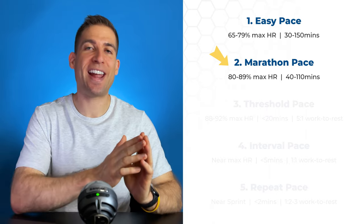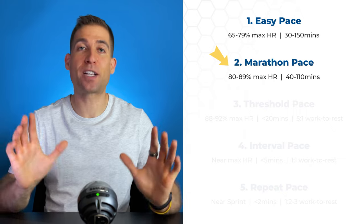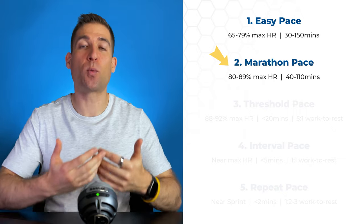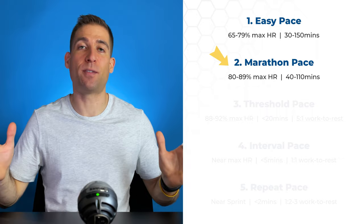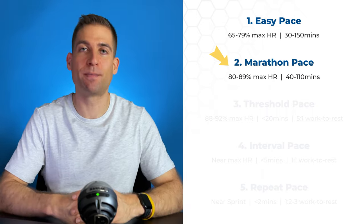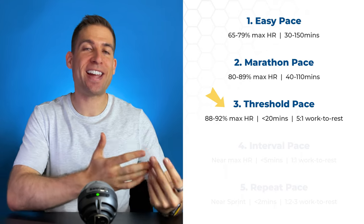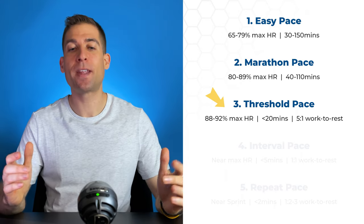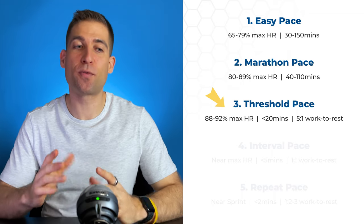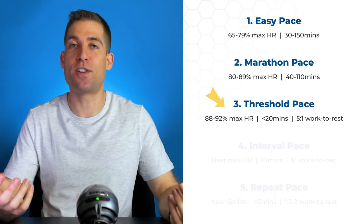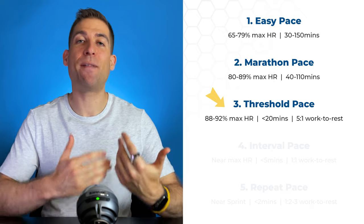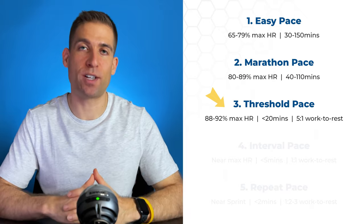Marathon Pace: these runs are performed at 80-89% of your maximum heart rate and are designed to give you confidence in your ability to run at that pace for extended periods of time. They're meant to prep you for a marathon, which is not relevant for me. Threshold Pace: these runs are performed at 88-92% of your maximum heart rate and they are tougher. You will be slightly winded afterwards. They're designed to improve your lactate clearance and endurance, and should be performed for a maximum of about 20 minutes with a 5-to-1 work-to-rest ratio.